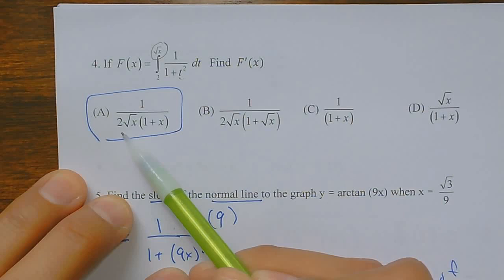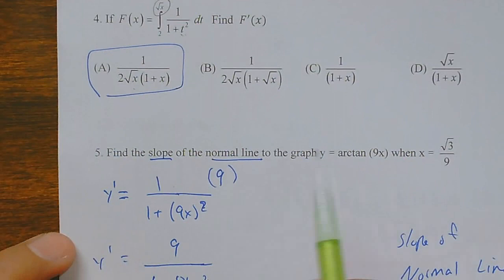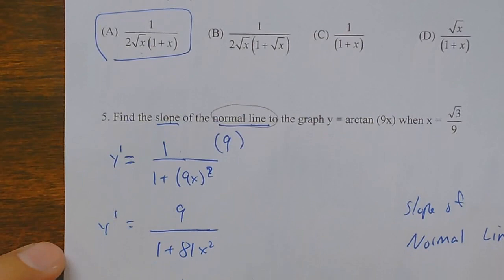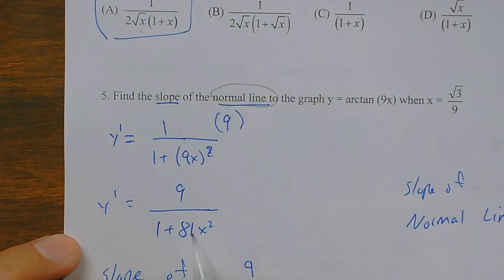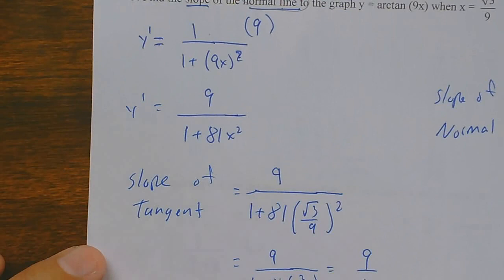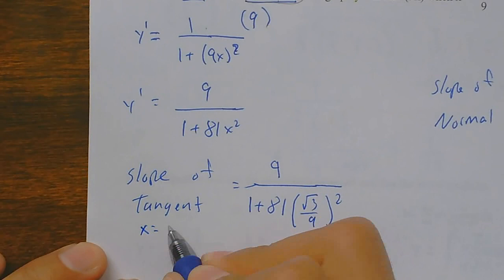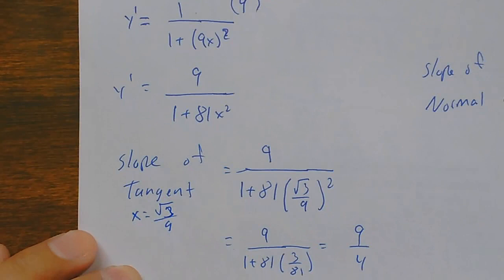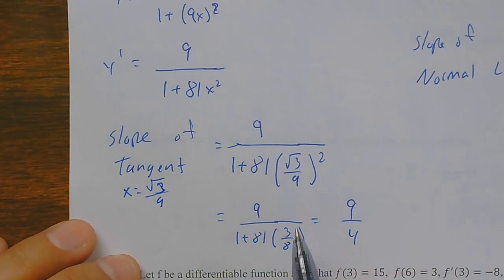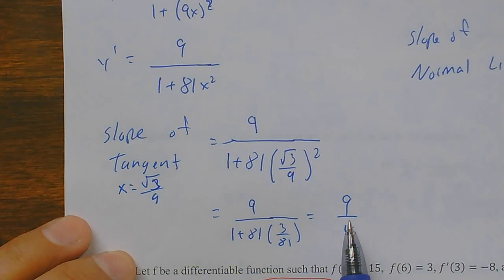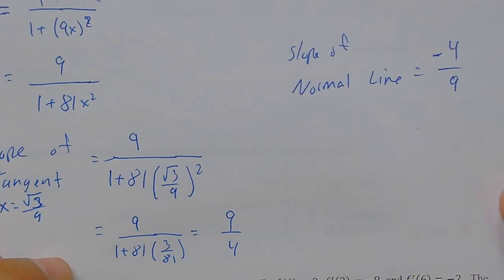Number five asks for the slope of the normal line — make sure you give the normal line. The derivative with the chain rule gives that expression. I find the slope of the tangent line by plugging in the x value, which was square root of three over nine. After substituting, the 81 went away, giving the tangent slope. The normal line slope is its negative reciprocal.